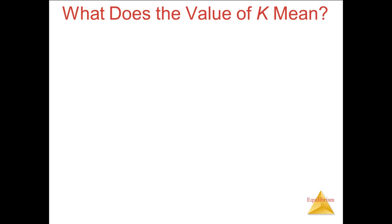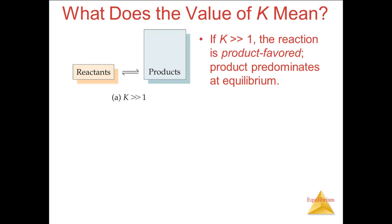What does the value of K mean? The value of K can vary over a wide range — K can be much greater than 1, much less than 1, or somewhere in between. If the value of K is much greater than 1, then the implication is that, once equilibrium is reached, we have mostly products present.